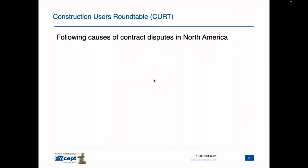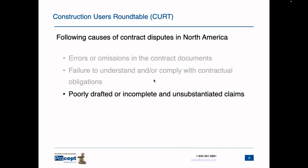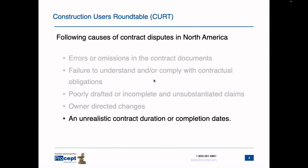The topics we will talk about in this webinar come from CURT — the Construction Users' Roundtable — which is the owner's voice to the construction industry. CURT's primary goal is to enact broad-perspective owner representation and increase owner leadership on construction industry issues. From the 2024 roundtable, the most prevalent topics in North American construction are: errors or omissions in contract documents, failure to understand or comply with contractual obligations, poorly drafted or incomplete and unsubstantiated claims, owner-directed changes, and unrealistic contract duration or completion dates.